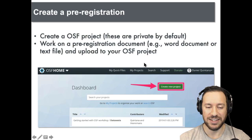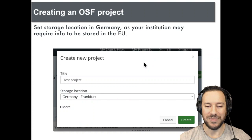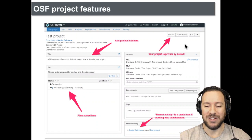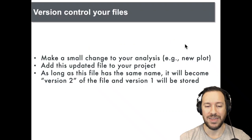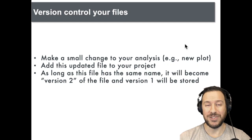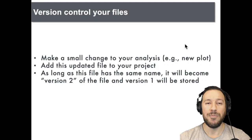It's very easy to create a pre-registration on the Open Science Framework — you simply create a new project, work on a pre-registration document, add a title and information, and add a wiki within your project. If you're working with collaborators, it's easy to see who's working on what since everything is documented. By default projects are private, but once you finish your registration you make it public and it's time-stamped. It's also very easy to version-control your files — if you upload a file with the same name, it recognizes it as version two.